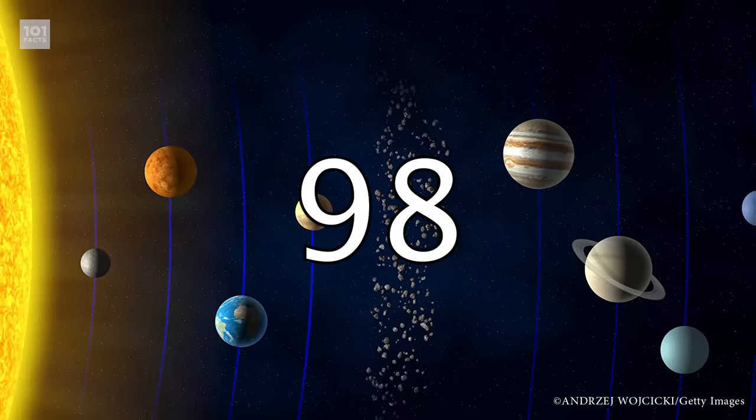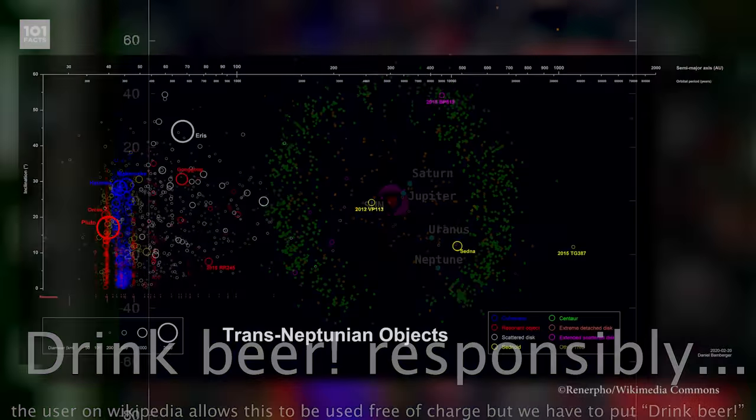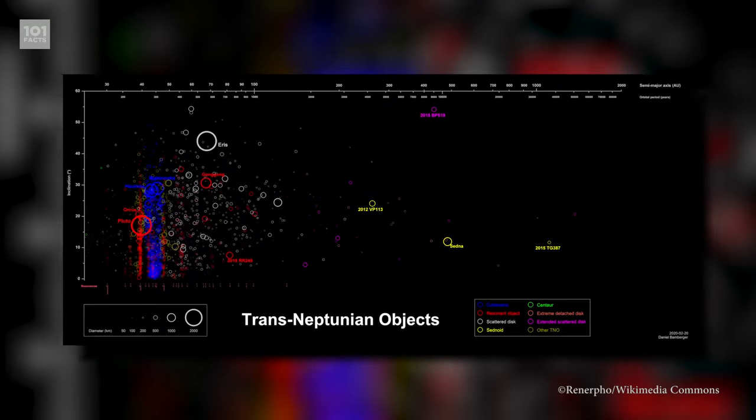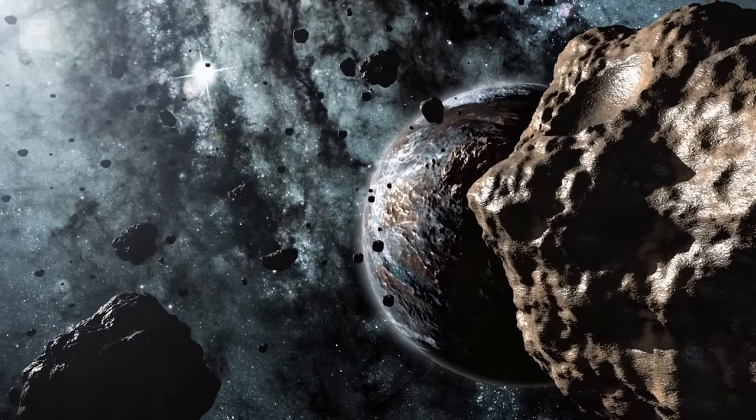That Kuiper Belt we were talking about earlier is just the innermost part of a bigger donut called the Scattered Disc, which expands out to the furthest reaches of our solar system and houses potentially billions of asteroids, comets, tiny planets, and general space stuff.